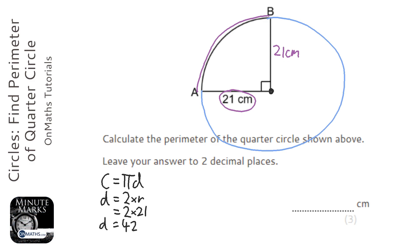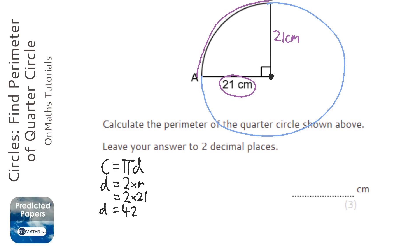And then we're going to work out the circumference, or the length of the arc. Now, a bit of a circumference is called the arc, so I'm going to call it an arc, and it just means it's a bit of a circumference.